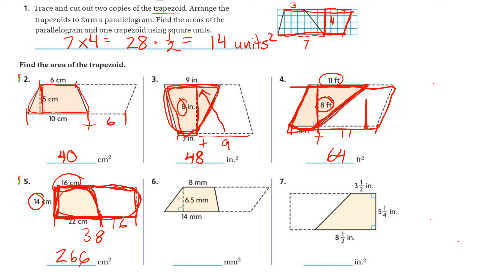Let's go on to number 6. Again, my height is given to me, 6.5. The length from here to here is 14, and then from here to here would just be add that. So 14 plus 8, which is 22. That would be my total length, 22.